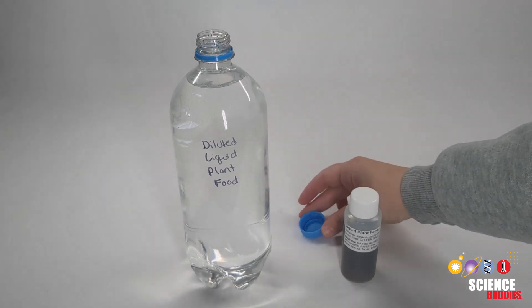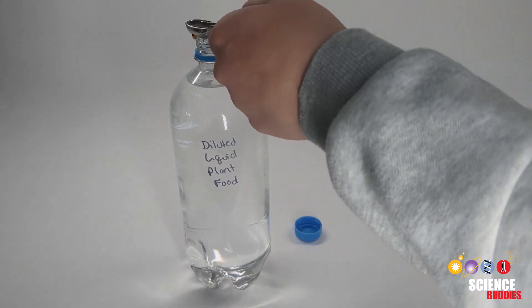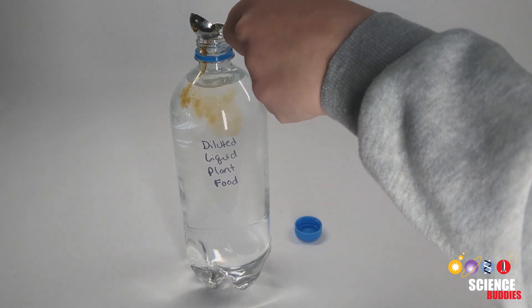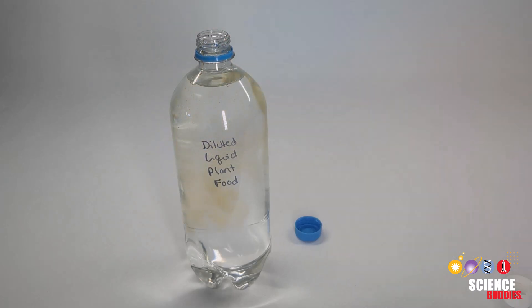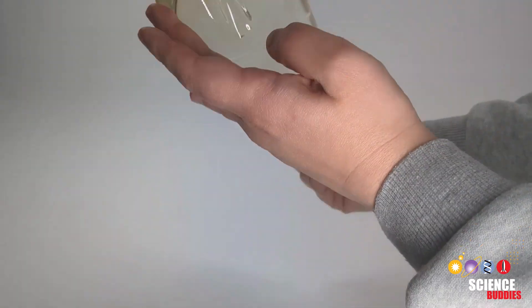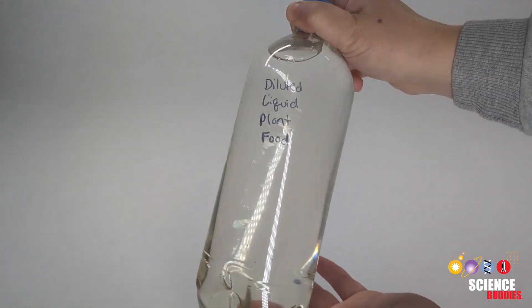Prepare your nutrient solution by measuring one half of a teaspoon of liquid nutrient solution and pour it into a liter of water. Invert the bottle three times to mix this solution until it's homogeneous.